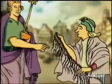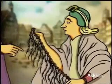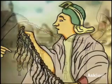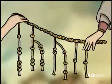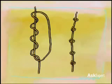Knots tied in cords and strings were used for recording amounts by many cultures, like the Persians. The Incans used a more refined version called a kipu, a thick cord held horizontally from which hung knotted string. The kind of knot the Incans used, along with the length and color of the cord, represented ones, tens, and hundreds.